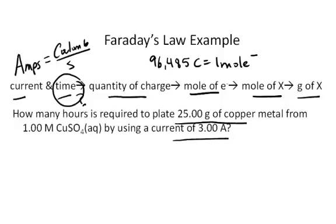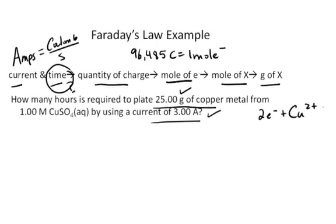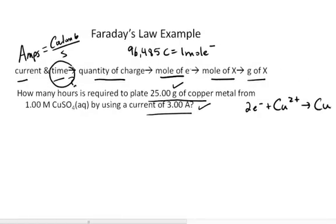In order to do this, we'll do a series of conversions since we have these relationships all the way down the line and we'll end up converting to units of time. First, we're given 25 grams and 3 amps. The stoichiometry here is that it takes 2 electrons to reduce 1 mole of copper to copper metal. So our relationship between the moles of electrons and the moles of copper is a 2 to 1 molar ratio.